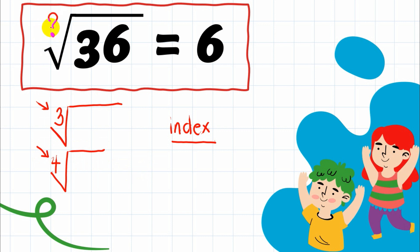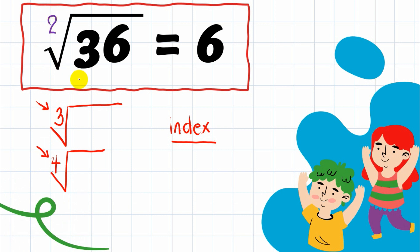You may wonder why there is no index visible. The reason we read it as the 'square root' of 36 is because 'square' means there is an invisible index of 2 there. When square root is being discussed and you see no index, that is a special case — the index of 2 is simply invisible, but you know it must be there.